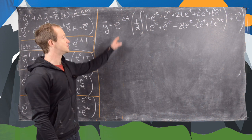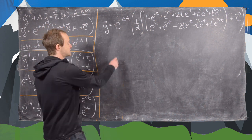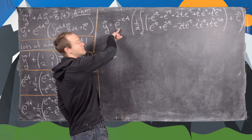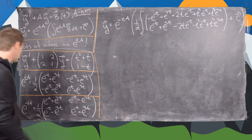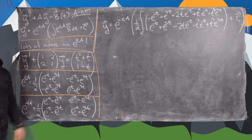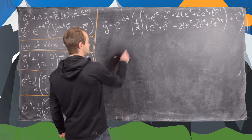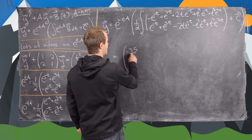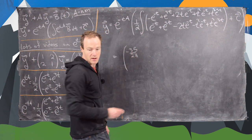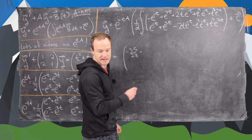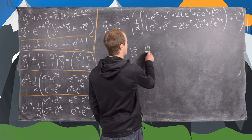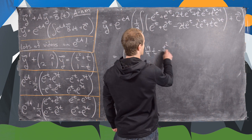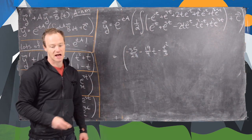I'll jump right to the end. If you take this antiderivative and then multiply by this matrix exponential, you will get the following. The top entry is: minus 35 over 27, minus 19 over 9 times t, minus t squared over 3.